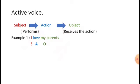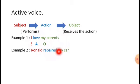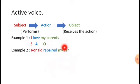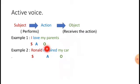One more example: 'Ronald repaired my car.' The action done here is 'repaired.' Ronald performs this action, so Ronald is the subject. My car receives the action — the car is being repaired — so 'my car' is the object. Ronald is the subject, 'repaired' is the action, and 'my car' is the object. Active voice is simple.